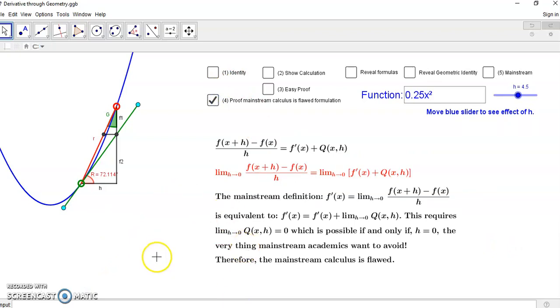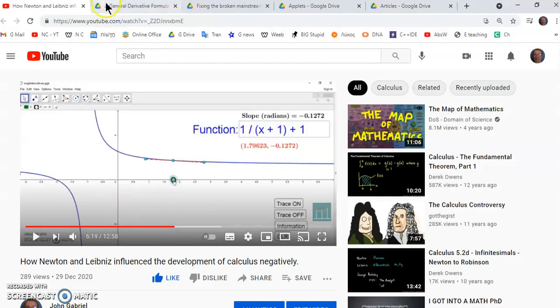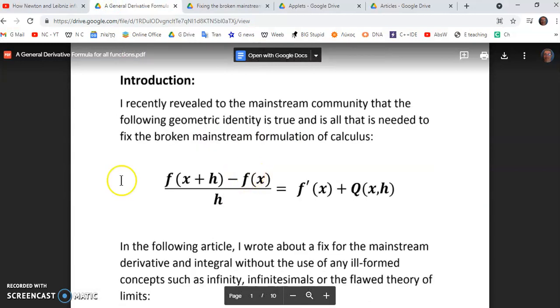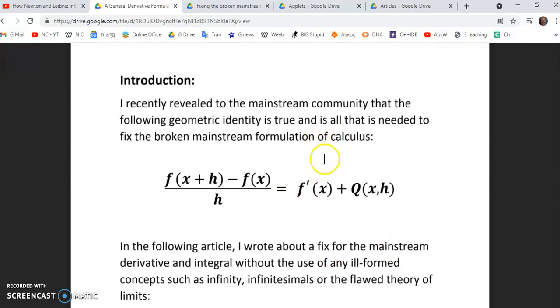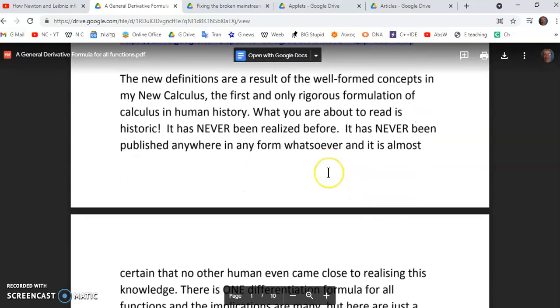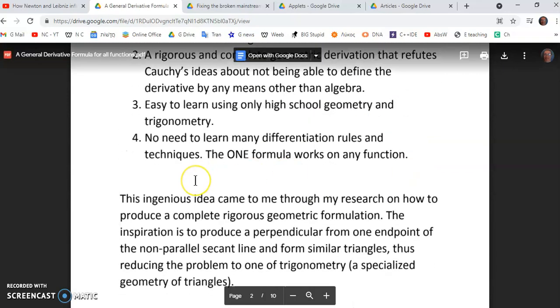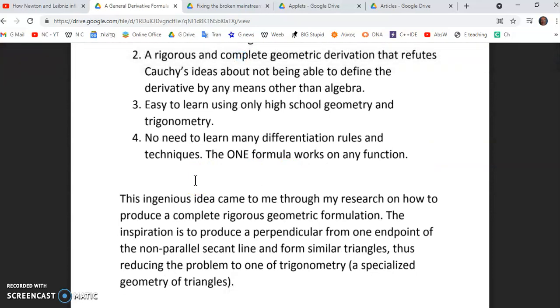So we're sitting with a huge problem here in the formulation of the flawed mainstream calculus. Not to spend any more time on that, but I've written a whole write-up on how I discovered that it was realized from the new calculus, which by the way is 100 percent rigorous. Mainstream calculus does not handle inflection points properly, the new calculus does.